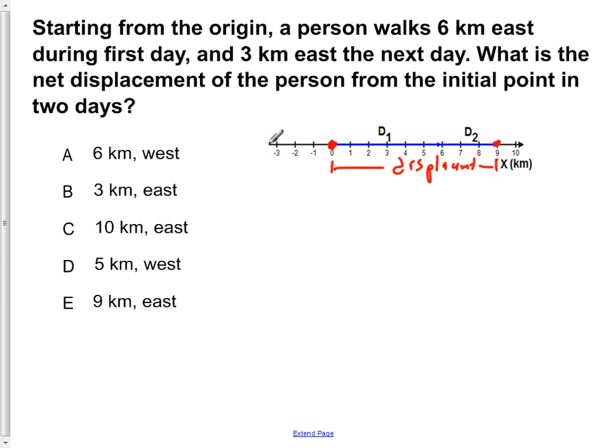Then you have to check for direction. This is towards the east as stated up here because both of them are directed towards the east. Our net displacement is going to be nine kilometers east.